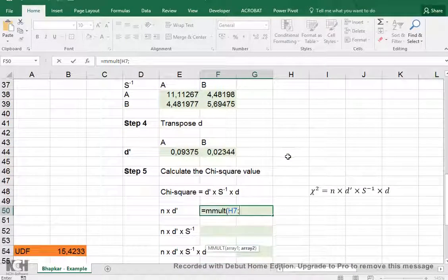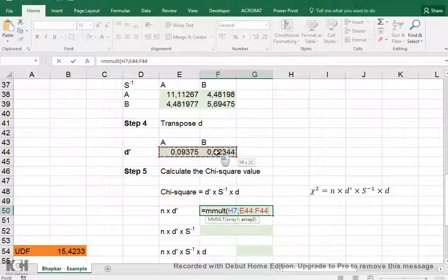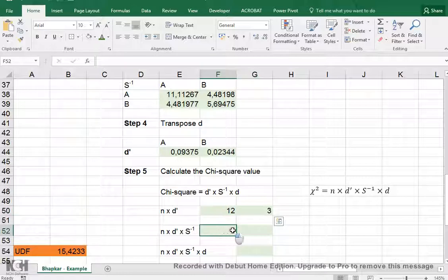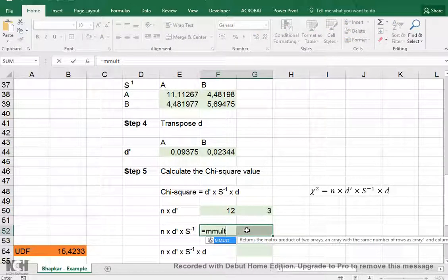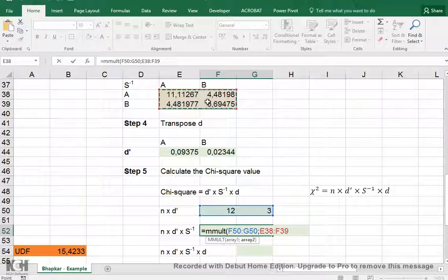and then I select the inverse of the d, which was this one, and then again Ctrl-Shift-Enter. Then we need to multiply this result with that inverse matrix, so we select both of them again, equals MMULT, and we select these two semicolon, select all these four, and again Ctrl-Shift-Enter.